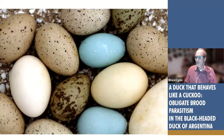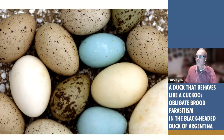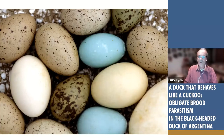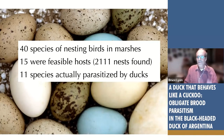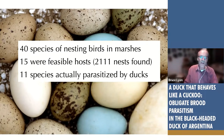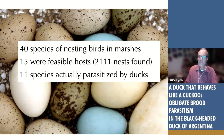Here's a collection of many different eggs from the local marsh. The main method of the study was to find every nest of every bird that could conceivably be a host of these ducks. There were 40 species of nesting birds in these marshes; 15 were feasible hosts, meaning big enough with incubation periods long enough. We found over 2,000 nests, and 11 species were actually parasitized by ducks.